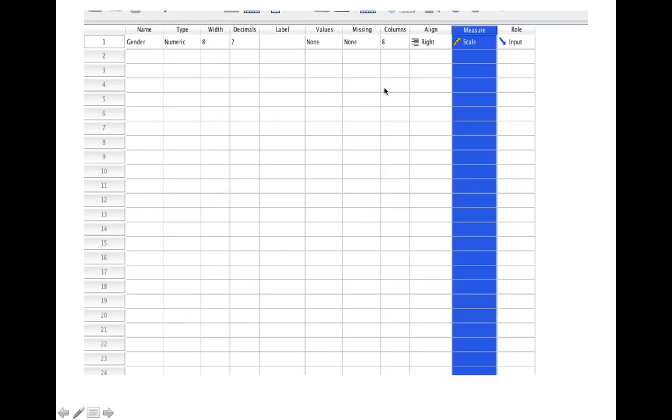That variable property is the scale of measurement, and in this screenshot of the variable view mode in the SPSS data editor you can see that I've highlighted the column that relates to the scale of measurement. That's going to be the column we're interested in with regards to today's tutorial.